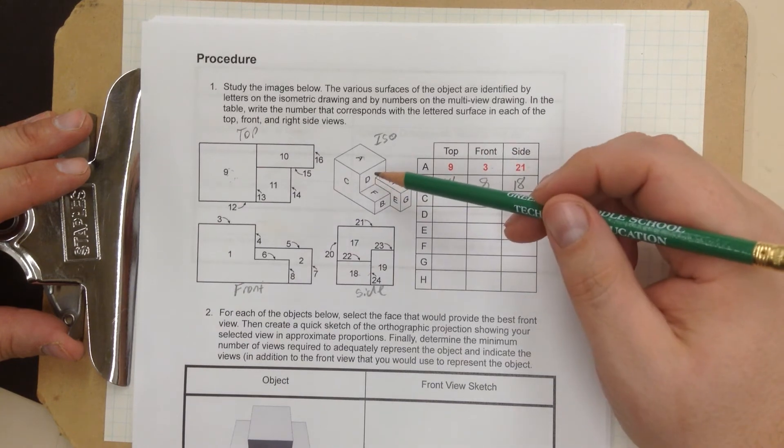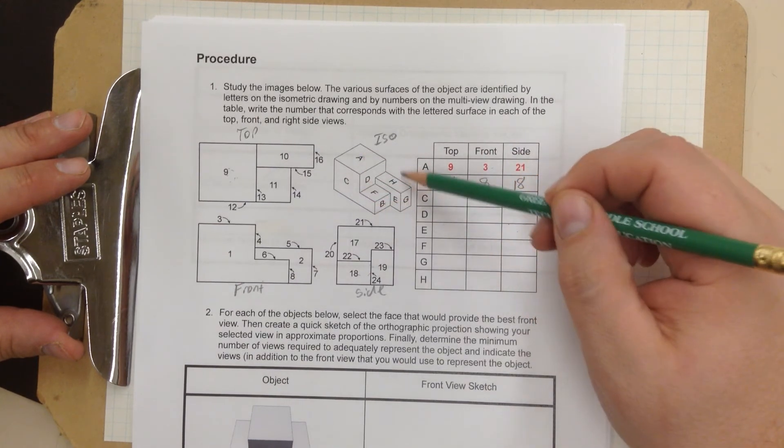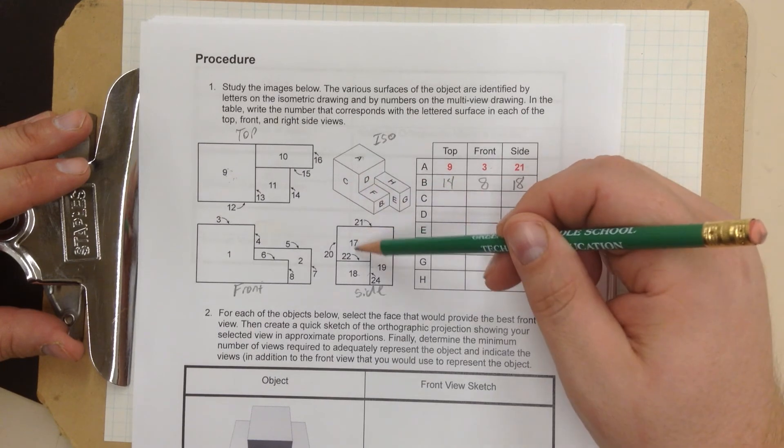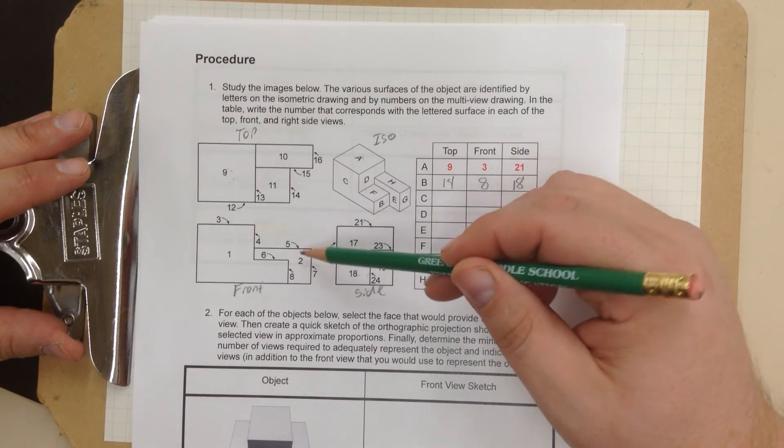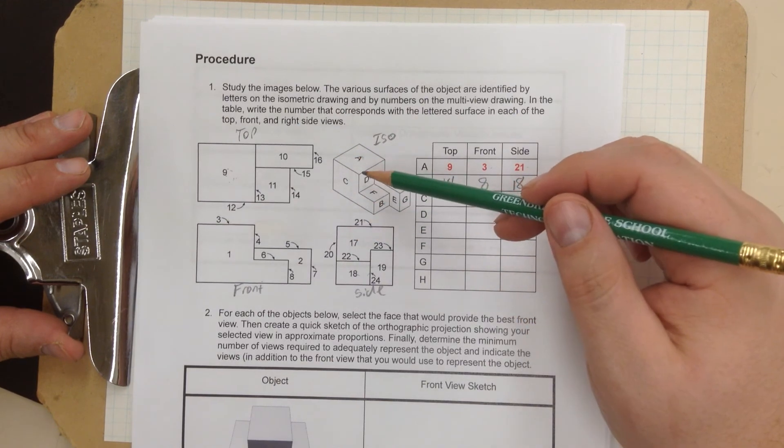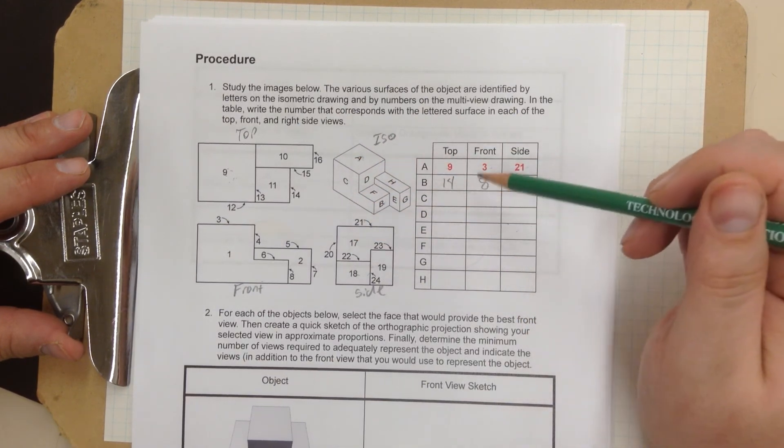Okay, remember, in this assignment, all you're going to be doing is looking at the ISO, finding every part, and then finding the numbers that correspond with that part. If you've got any questions, let me know. Stop this video, replay, rewind as many times as you need to complete this.